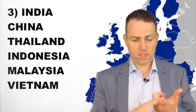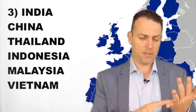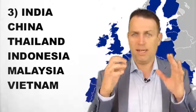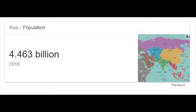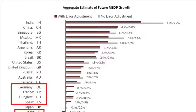Number three: Asia. India, China, Thailand, Vietnam, Indonesia, Malaysia. Asia has a population of 4.46 billion people. Going back to Dalio's table, look at the top: India, China, Singapore, Mexico, Thailand, Argentina, Korea — and a lot of countries he didn't include as he only looked at 12 to 20 countries. So diversify here — 4.4 billion people, growing economies. There is some debt, there will always be issues, but how will this look in 20 years? And how will Europe look in 20 years?